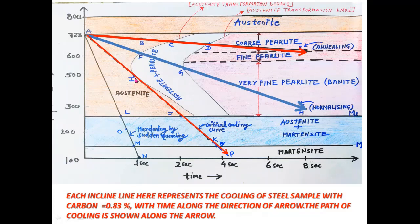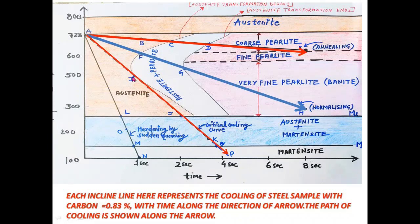All points between A and J on the arrow correspond to austenite, as they lie in the orange region. At point J, the austenite starts converting into martensite. Between points J and Q, the microstructure is a mixture of martensite and austenite. On cooling further, we reach point Q, which marks the end of austenite conversion to martensite, and we enter the martensite region. The final microstructure will be martensite, and this process is called quenching.